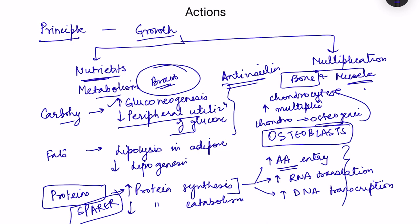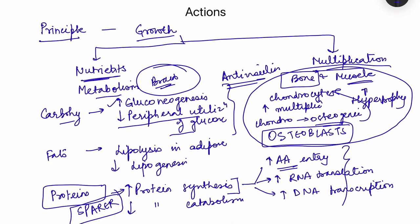In muscle, growth hormone causes hypertrophy due to increased protein synthesis. For overall growth, a positive balance of calcium, phosphorus, and magnesium is required for bone mineral synthesis. Growth hormone increases gastrointestinal absorption of calcium and decreases its excretion, diverting these minerals toward growth rather than loss in urine.